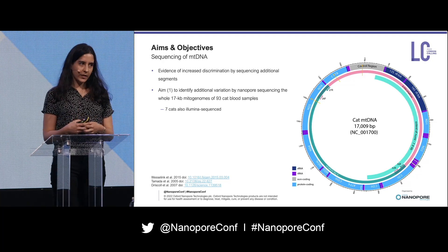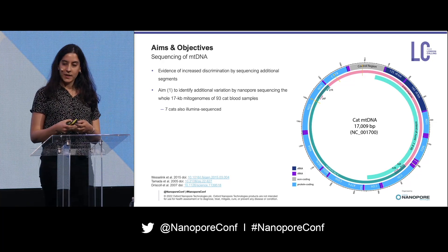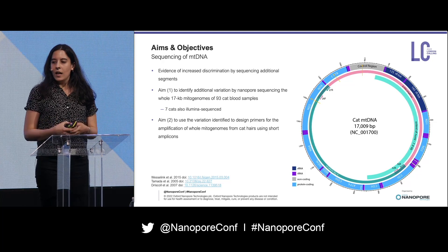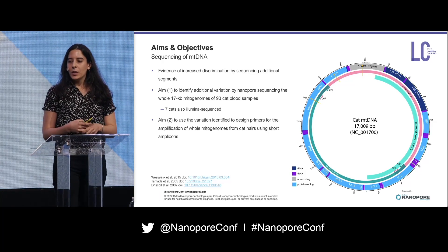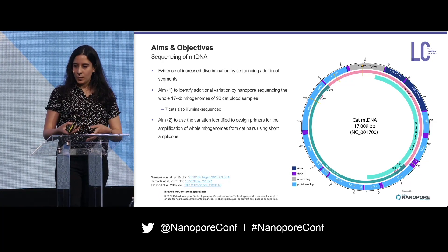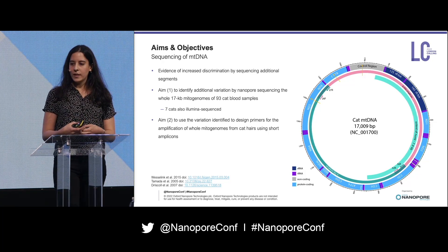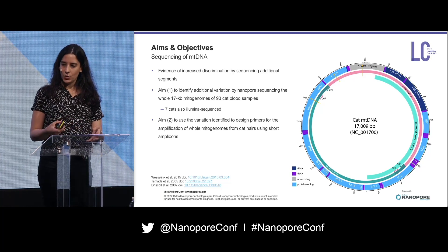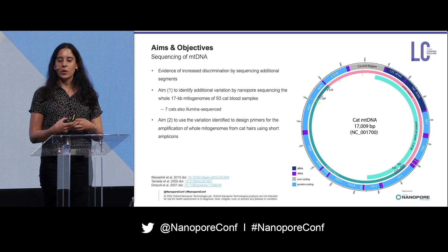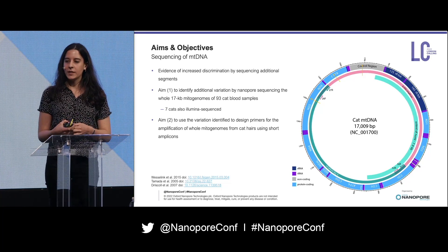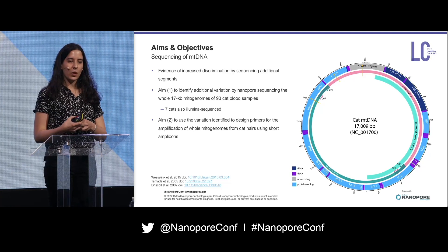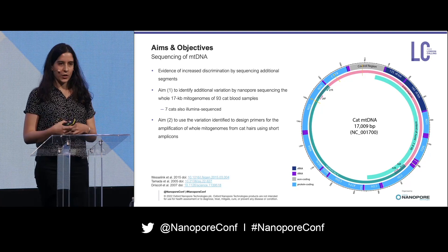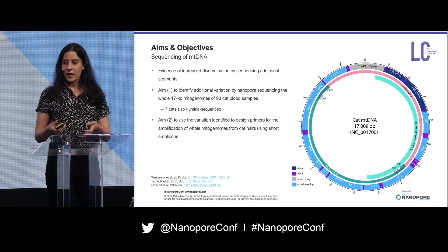We also sequenced seven cats using Illumina sequencing. And because we wanted to apply this approach to cat hairs, which are more degraded and require shorter amplicons, we wanted to use the variation identified to design primers for whole mitogenome amplification from cat hairs.